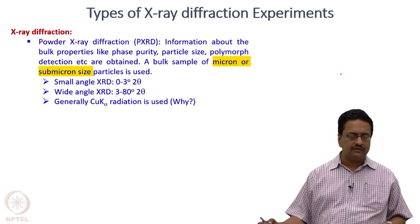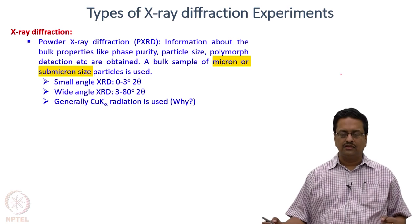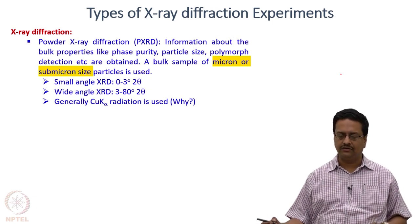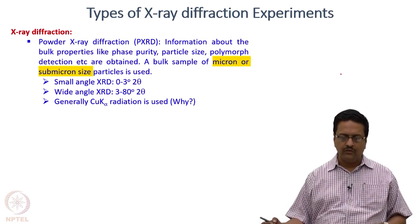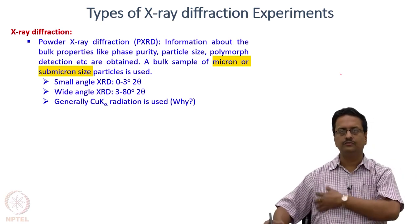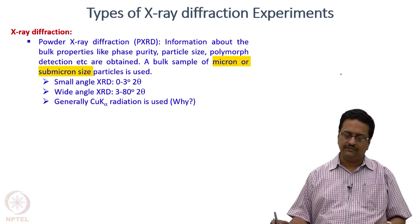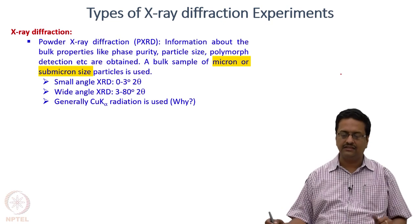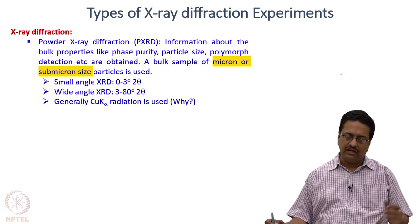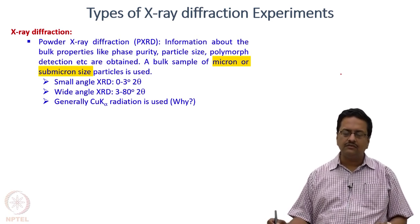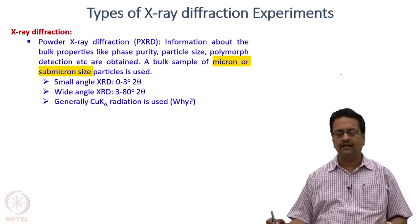Using X-rays, what are the different types of experiments that we can do? If we have a powdered sample — a bulk sample where the collection of particles are in the range of micron or submicron size — we can use powder X-ray diffraction to characterize that particular sample. Powder X-ray diffraction is divided into two types: small angle X-ray diffraction (2θ from 0 to 3 degrees) and wide angle X-ray diffraction (generally from 3 to 80 degrees or slightly higher). For powder X-ray diffraction, we generally use copper Kα radiation.